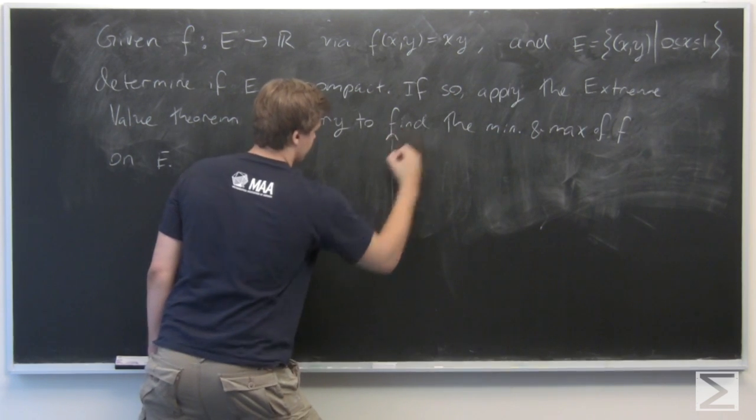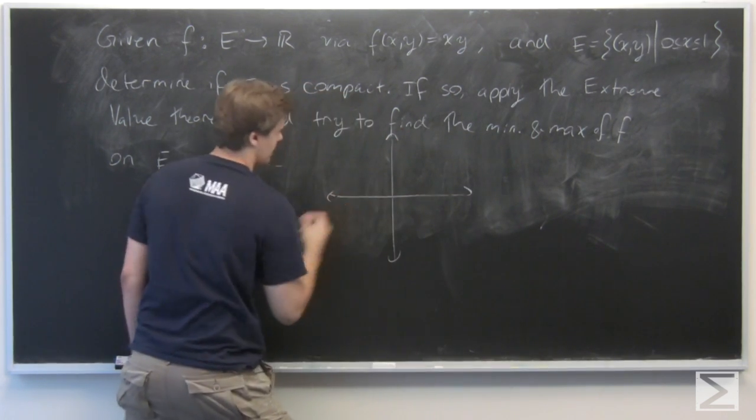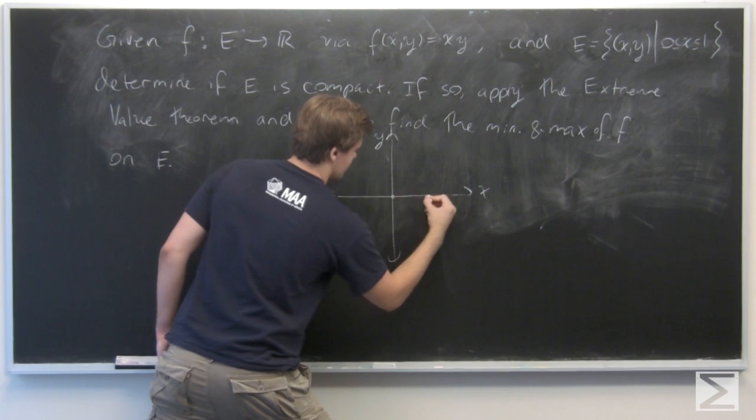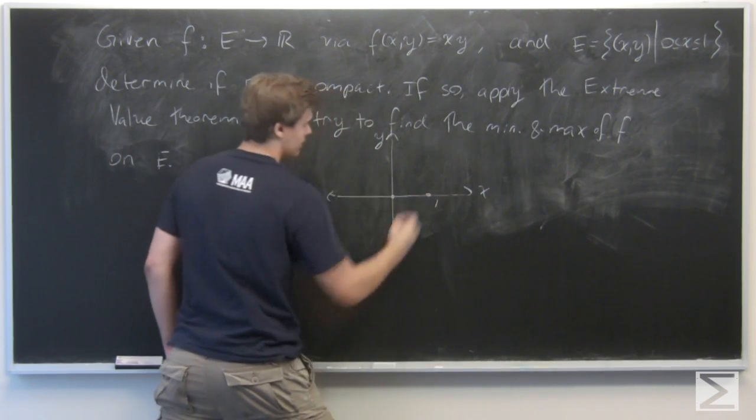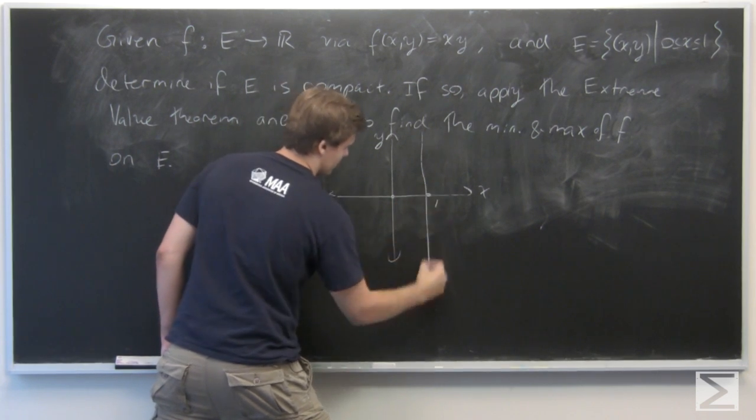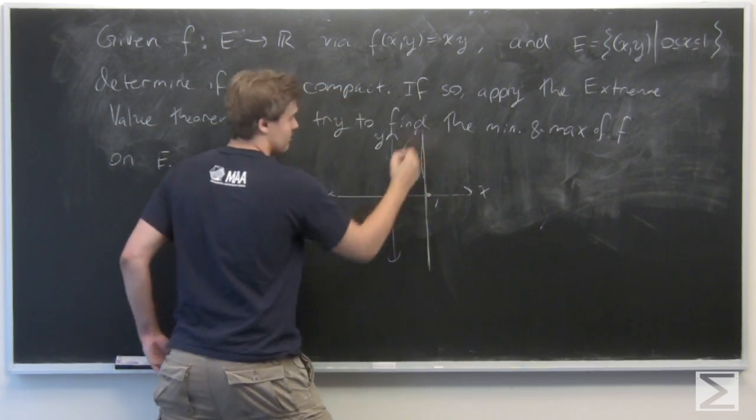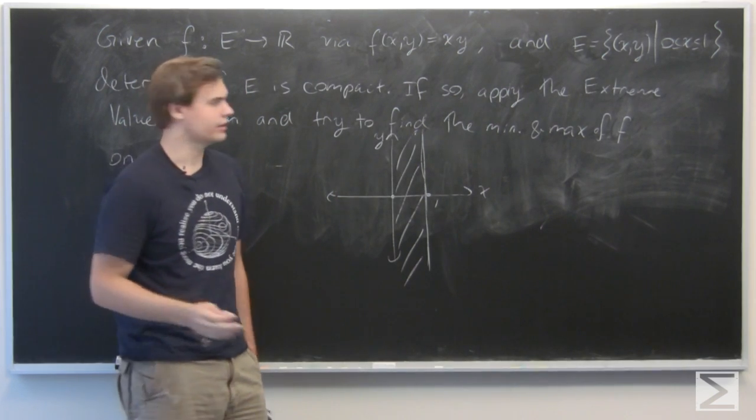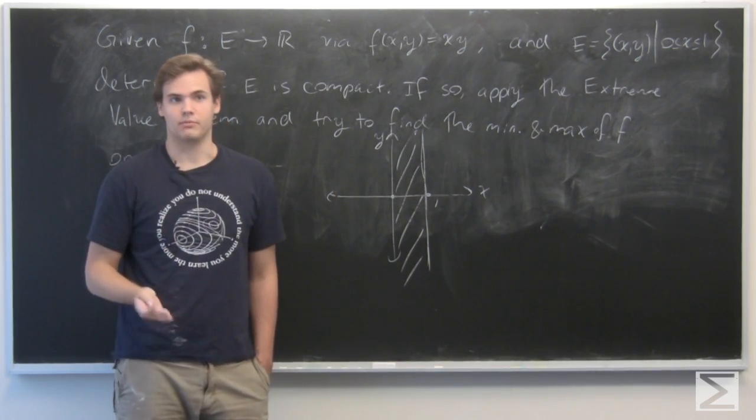So, graphing this, we see that, this is the x-axis, this is the y-axis, we have origin and 1. This is the set of points along this infinite strip, which is definitely not going to be bounded, so therefore it cannot be compact.